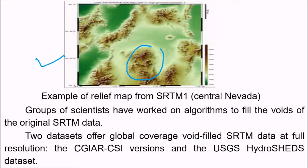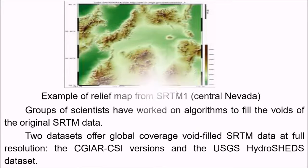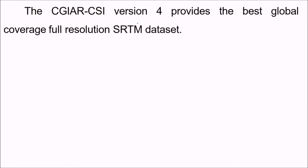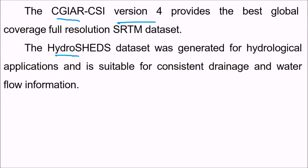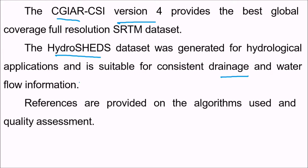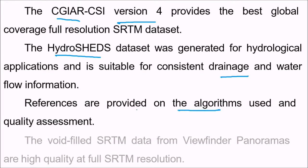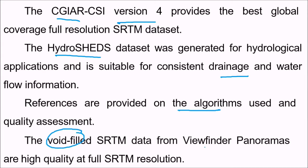Two datasets offer global coverage of void-filled SRTM data at full resolution: the CGIAR-CSI versions and the USGS HydroSheds datasets. CGIAR version 4 provides the best global full-resolution SRTM coverage, while the HydroSheds data was generated for hydrological applications and is suitable for consistent drainage and water flow information. References are available for algorithm use and quality assessment.